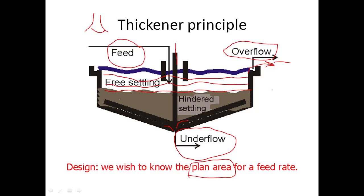The thickener is a low energy device — basically gravity is doing the thickening. The particles are settling in what's called hindered settling rather than free settling. Gravity is free, but we still need some energy to pump the fluids around. Essentially what we're talking about is establishing the correct plan area of the thickener. If we get that right, the process works.